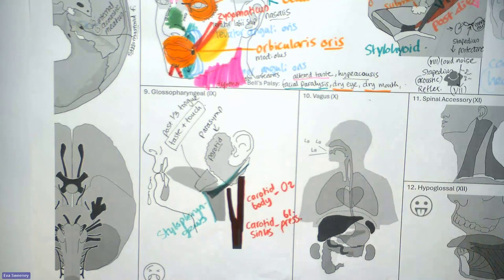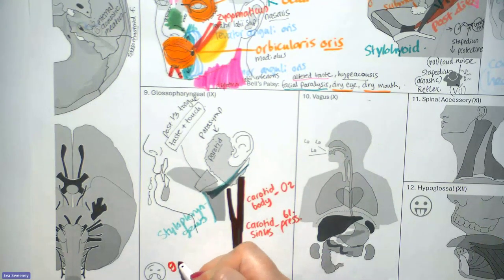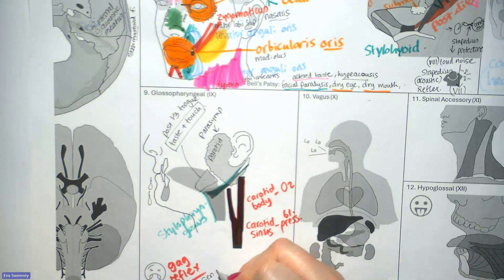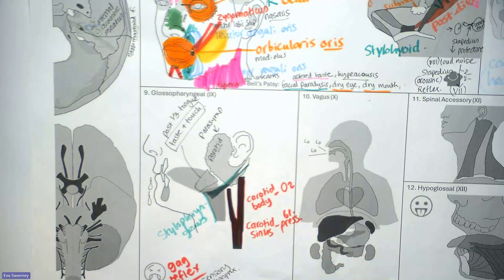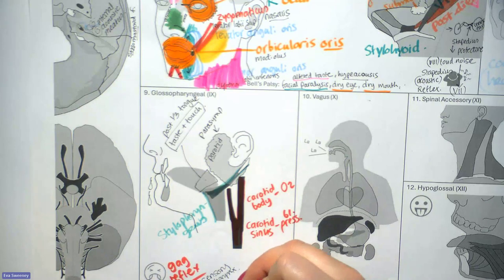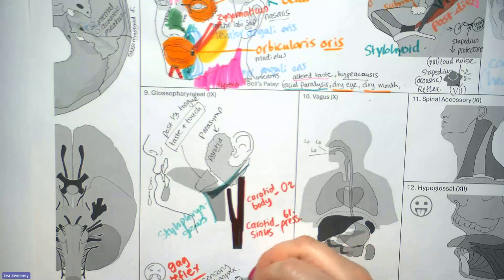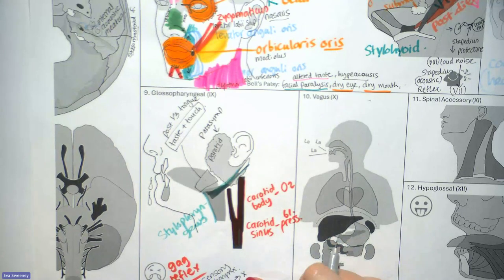Another function highlighted by the gag reflex icon is that the glossopharyngeal supplies sensory innervation to aspects of the pharynx, allowing detection of something you might choke on. This is the sensory limb of the gag reflex. The motor arm — pharyngeal muscles contracting — is controlled by the vagus nerve, cranial nerve ten.